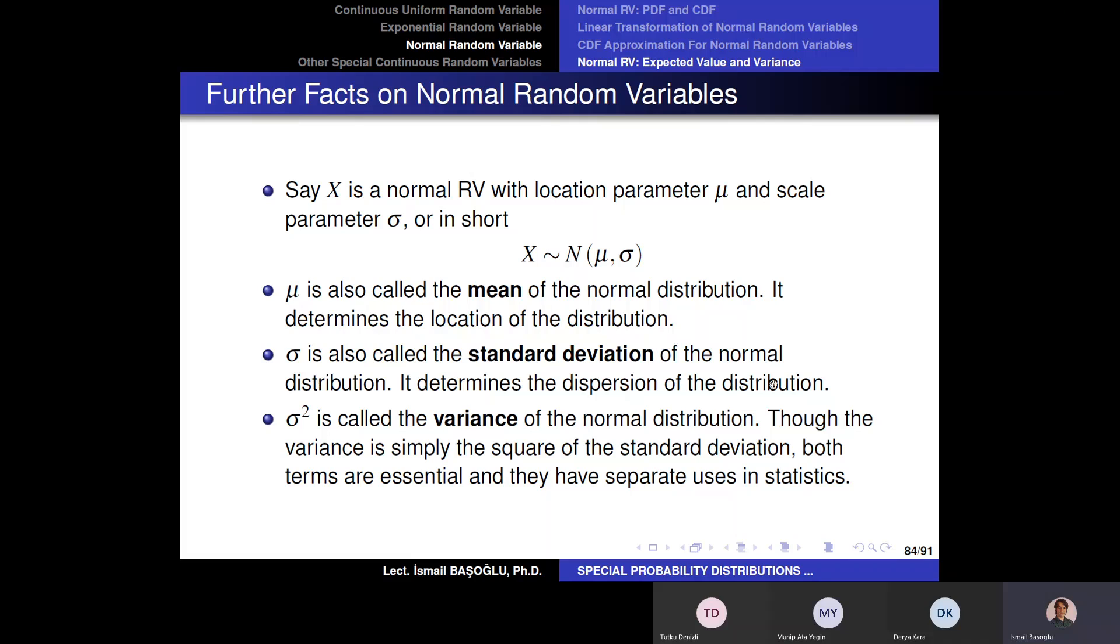Sigma is called the standard deviation. Sigma is called the standard deviation of normal distribution. Now, this is a new concept that you learn. My friends, standard deviation is the square root of the variance. So what is standard deviation? It is basically the square root of the variance. Standard deviation is the square root of the variance. And sigma is the standard deviation of the normal distribution. And it determines how the potential values, these random variables, can be dispersed over the real line. So it is a measure of dispersion. And sigma square is called the variance of the normal distribution. Now, you know, the variance is simply square of the standard deviation.